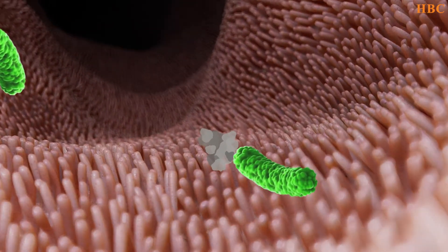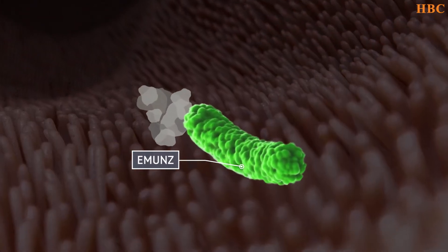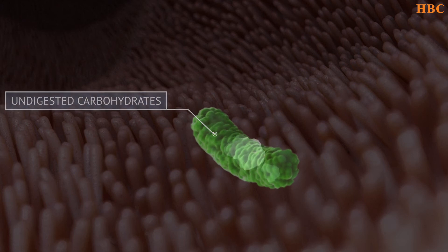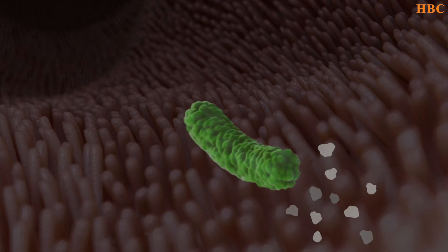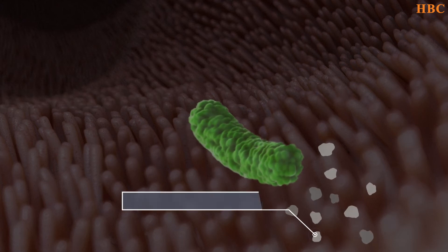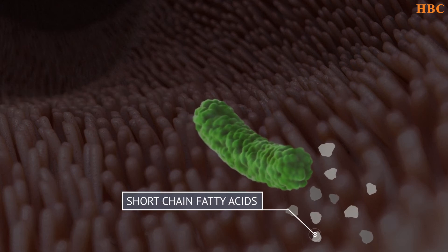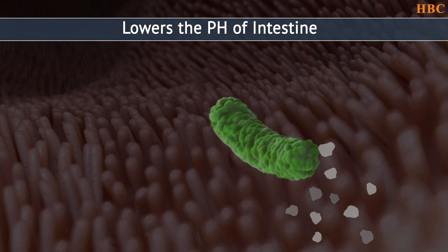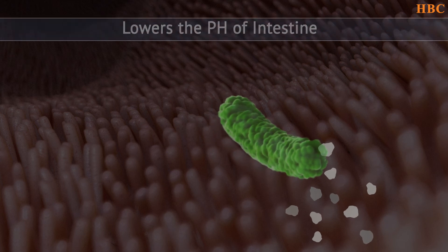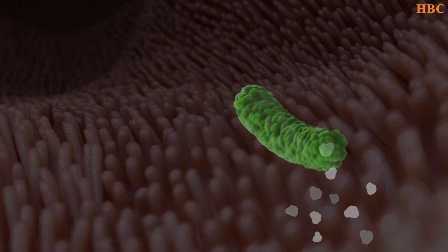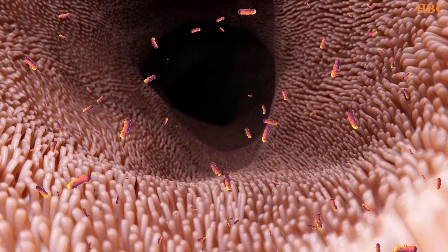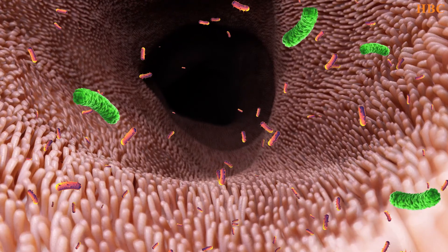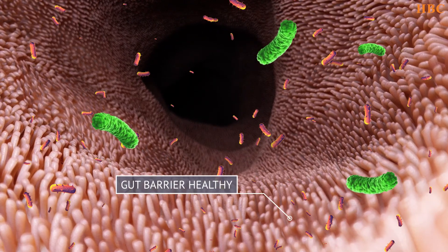Moreover, Immunes ingests the undigested carbohydrates and converts them into short-chain fatty acids, which lowers the pH of the intestine making it inhospitable for pathogens. Immunes also helps to keep the gut barrier healthy.